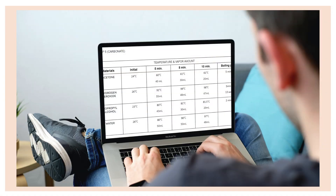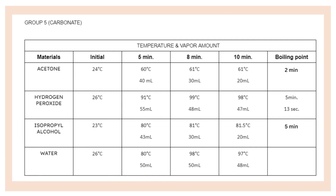Here is the table of the data gathered in our experimentation. To break it down, the initial temperature of the liquids — acetone, hydrogen peroxide, isopropyl alcohol, and water — are 24 degrees Celsius, 26 degrees Celsius, 23 degrees Celsius, and 26 degrees Celsius, respectively.